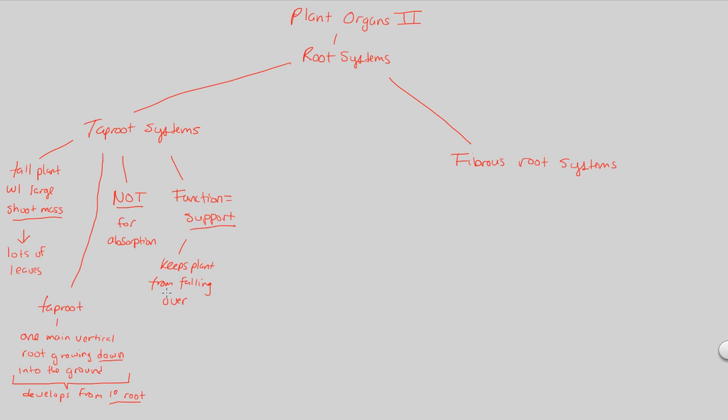That's always good. If you're not falling over, that means you're definitely able to get some sunlight, which is very important as a plant. Furthermore, because the plant's not falling over and has this strong foundation, it allows the plant to be tall. If a plant has a tap root, it can be tall and won't fall over as a result of that tallness.